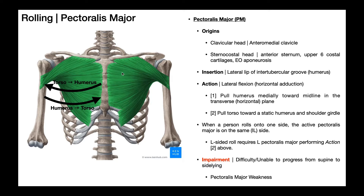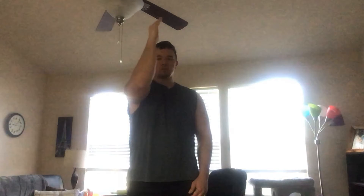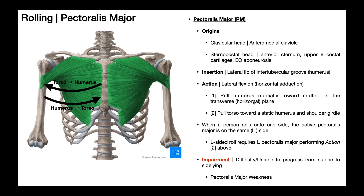The next important muscle is the pectoralis major. The origins depend on which head: the clavicular head originates on the anteromedial clavicle, and the sternocostal head originates on the anterior sternum and the upper six costal cartilages, with additional origin on the external oblique aponeurosis. When thinking about horizontal adduction, typically we picture the humerus pulling medially toward the midline in the transverse plane — the torso is static and the arm is mobile, as in dumbbell flies.